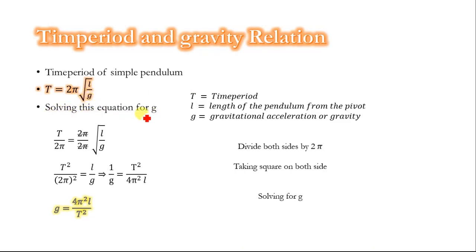To solve this equation for g, we divide both sides by 2π. The 2π will cancel and we get T/2π = √(l/g). Now taking the square on both sides, the square will cancel with the root and we have T²/(2π)² = l/g.